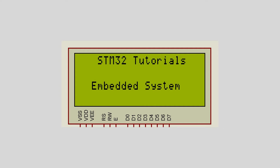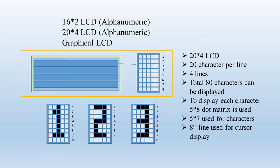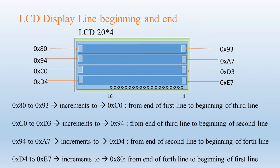Now let's try to display characters on the second line of the LCD. For that we have to understand the basics of the LCD. As seen in the previous tutorial, the 20x4 LCD can display 20 characters per line and there are 4 such lines. The characters are always displayed from the beginning of the first line's first position — this is an LCD setting we have configured in the LCD initialization function.